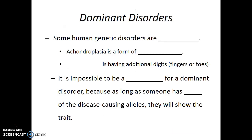Some human genetic disorders are dominant. Remember, just because an allele is dominant doesn't mean that it's common. Dominant genetic disorders typically are very rare in the population, but what makes it a dominant disorder is that an individual needs only one copy of the disease allele in order to have that genetic disorder.